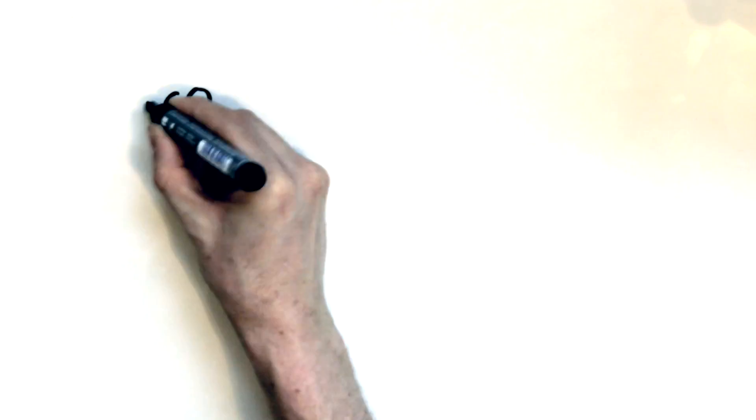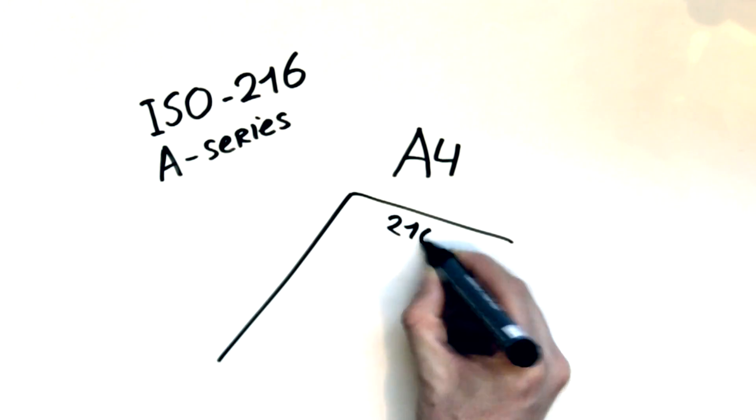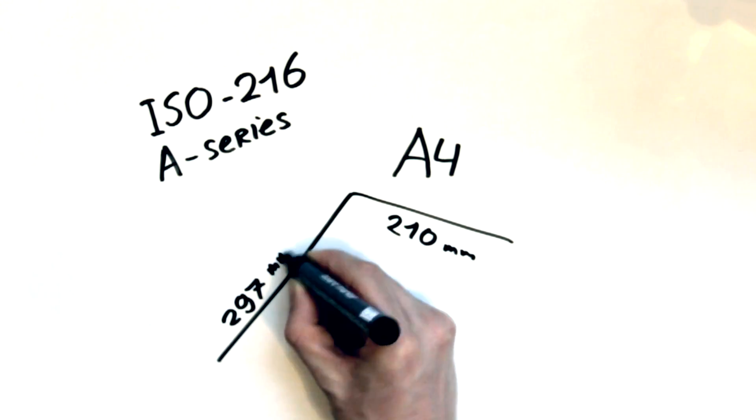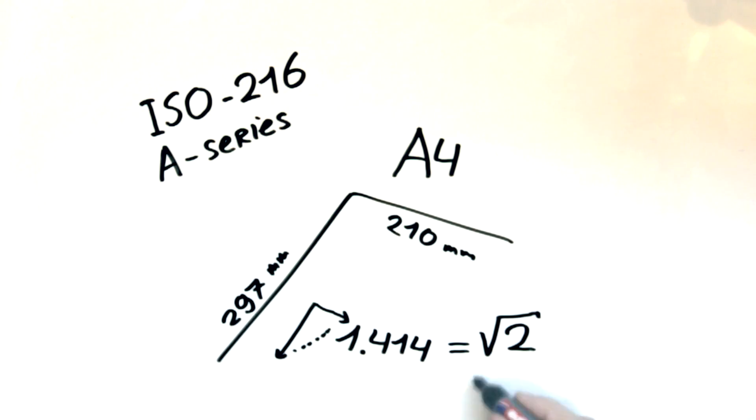Now on to ISO 216, the A standard. This standard is mostly known for the European Letter format A4. It is 210 by 297 millimeters and it has an aspect ratio of 1.414, which is the square root of 2.